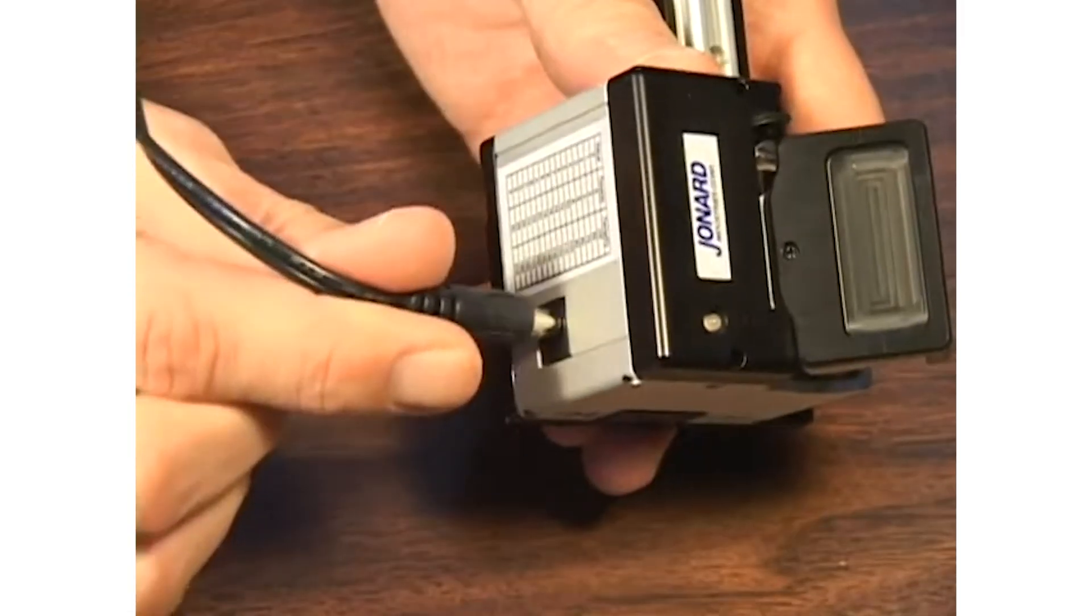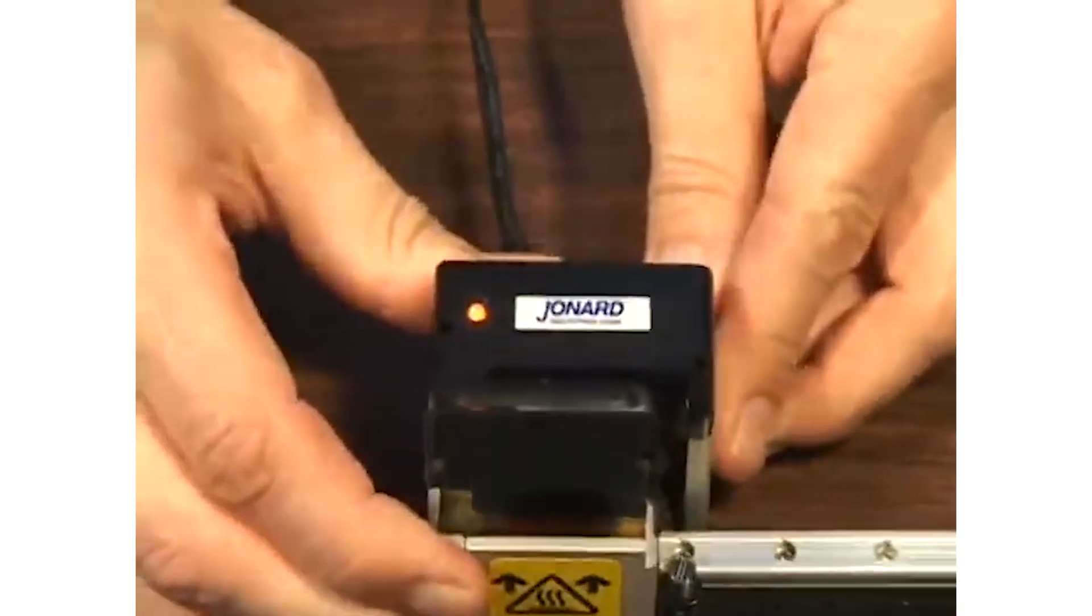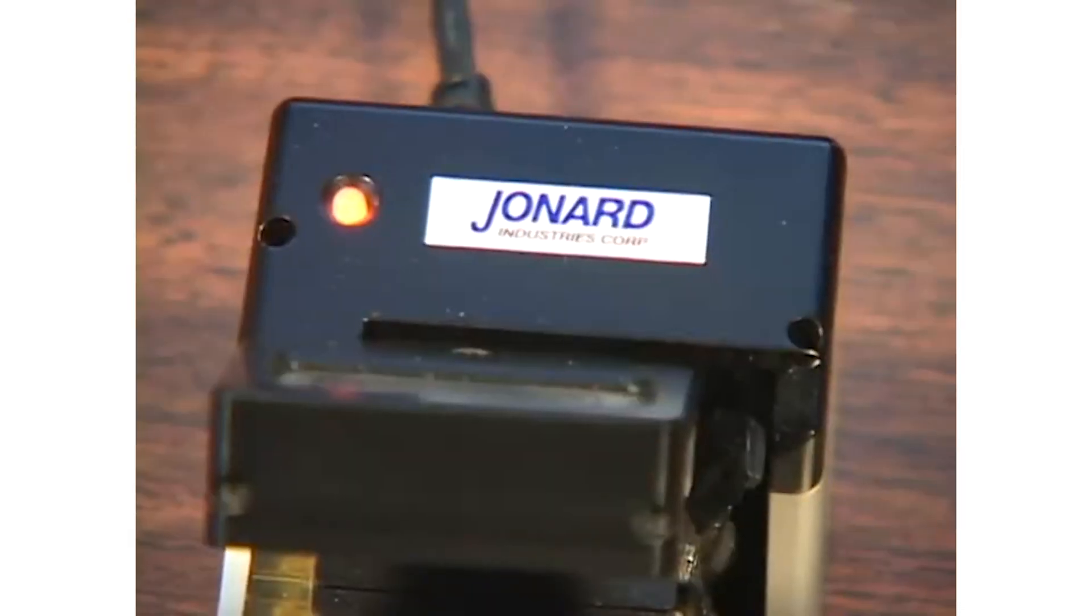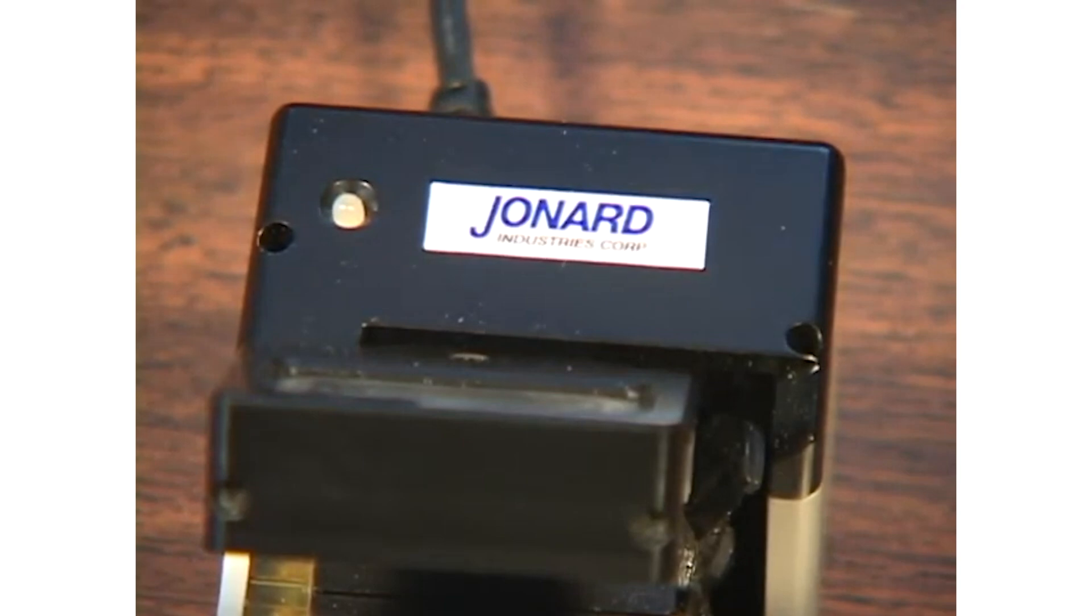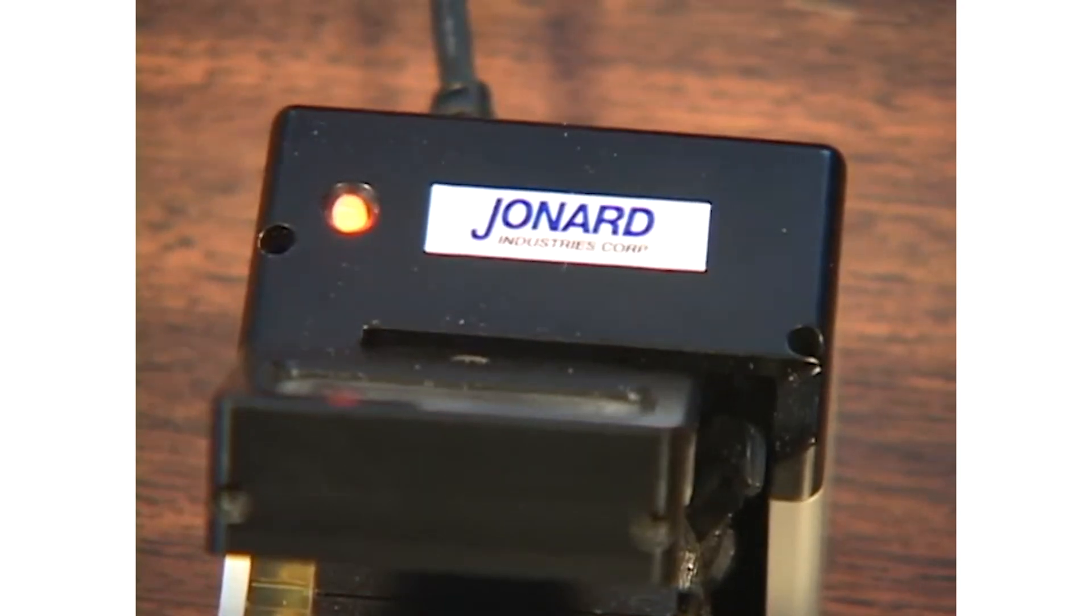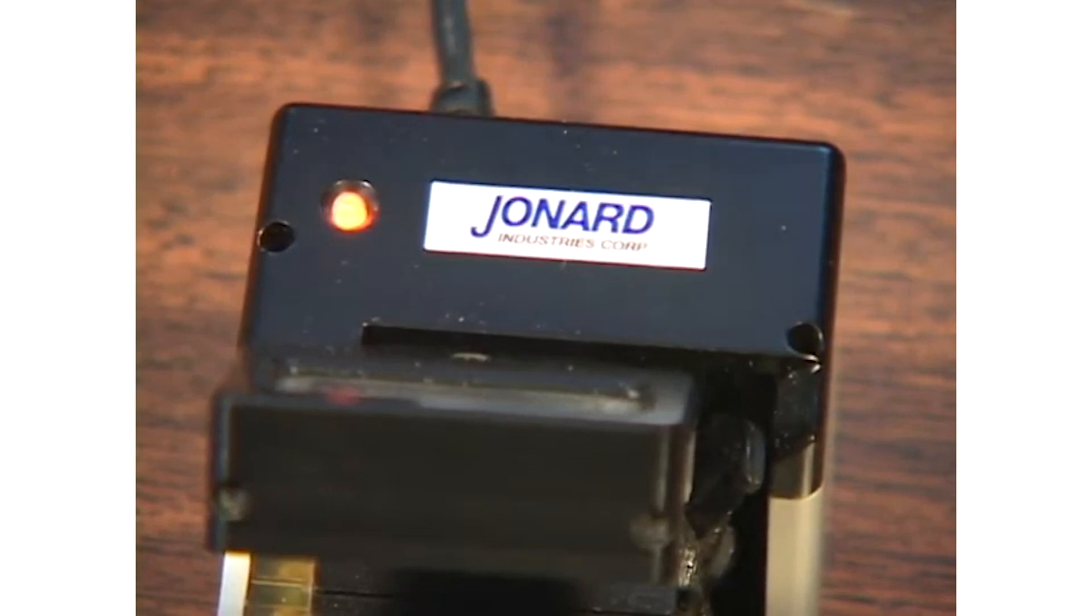To turn the unit on, simply plug the power cord into the outlet. Unplug the unit to turn it off. The indicator LED displays a steady red while the unit is heating to its set temperature. After the operating temperature is reached, the LED blinks red. The unit is now ready for use.